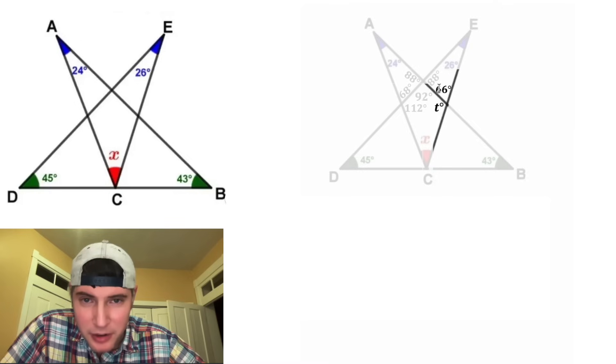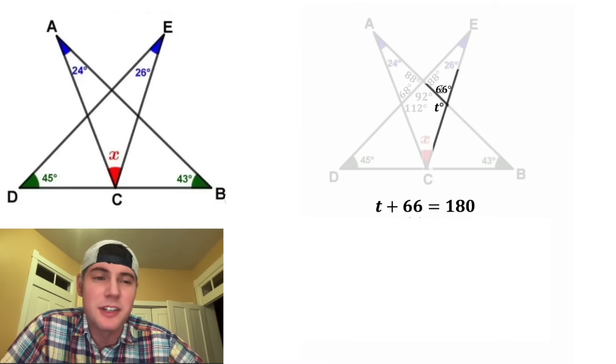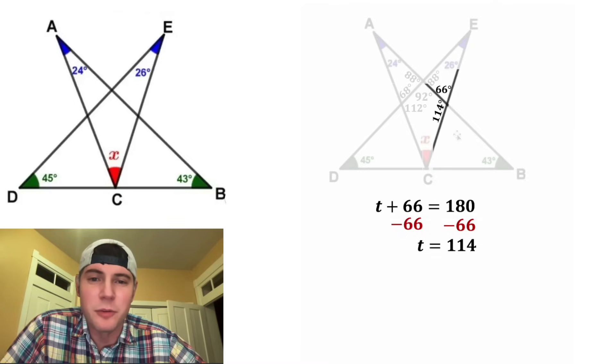So then we have this linear pair right here. So we know that T plus 66 equals 180. Or in other words, T is equal to 114.